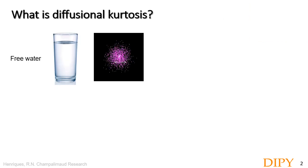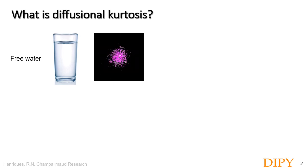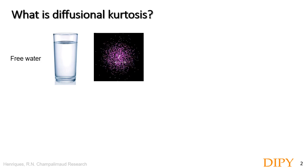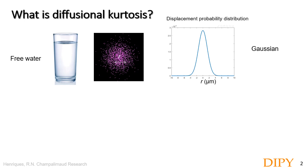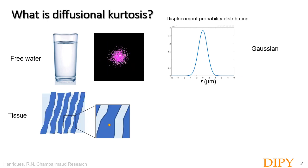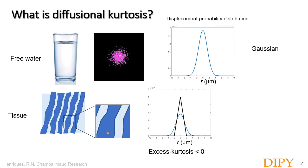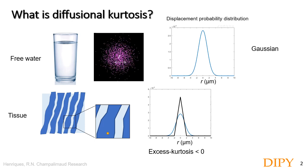So what is diffusional kurtosis? In free water, as for example in a glass of water, we expect that the displacement of diffusing molecules exhibits a Gaussian distribution. If we plot the displacement of the position of water molecules at a given time and direction, we will see that the displacements will follow a Gaussian distribution. However, water inside confined compartments is restricted, and if we look at the displacement probability function for confined compartments, we see that this deviates from a Gaussian distribution.